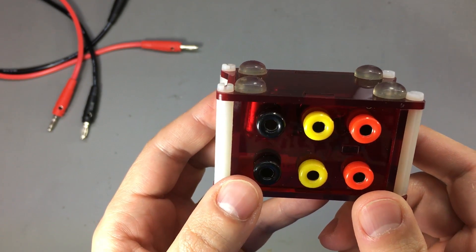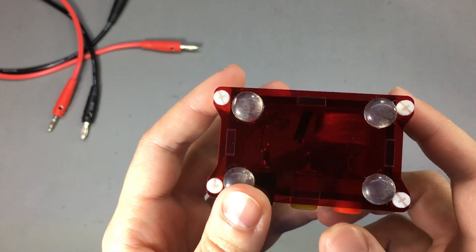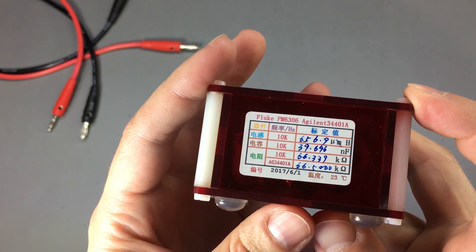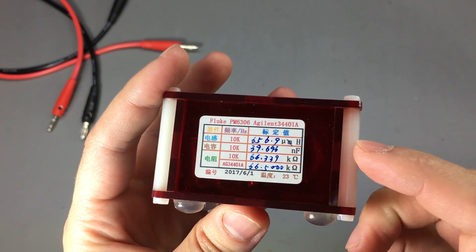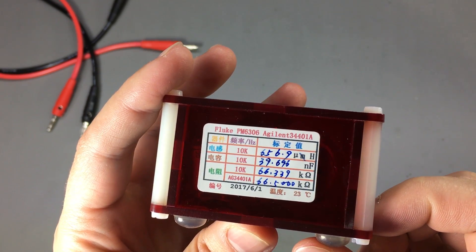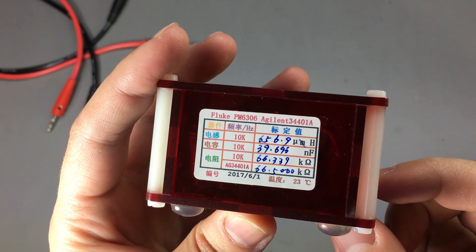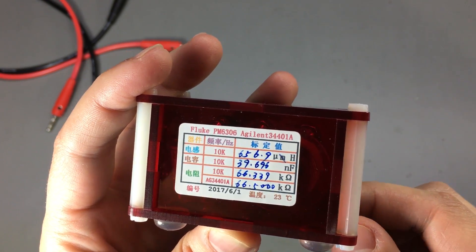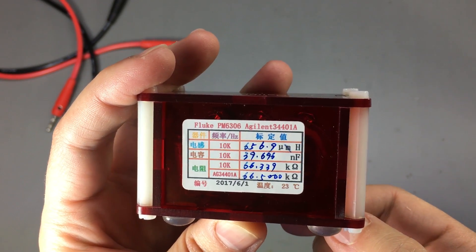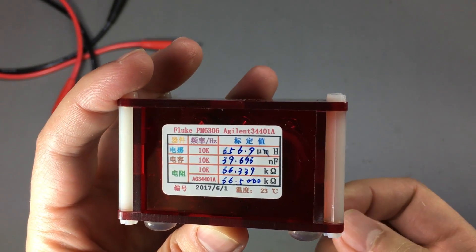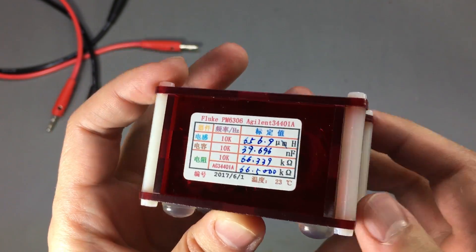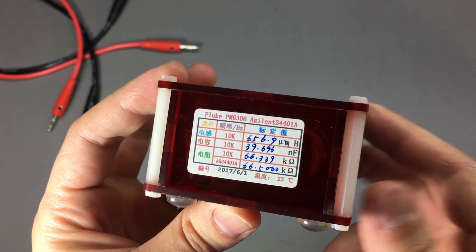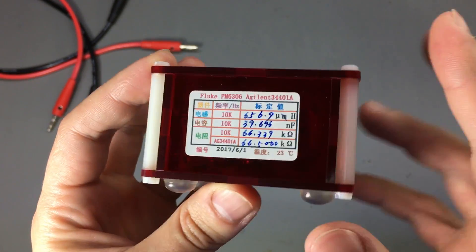I'm not sure if every unit sold has the same range of values, but mine has a 656µH inductor, a 39.6nF capacitor, and a 66.3kΩ resistor. If you happen to have one of these, let me know in the comments if you have the same values or maybe different.